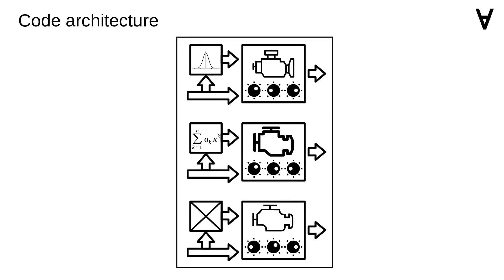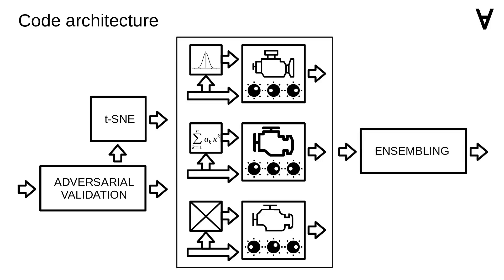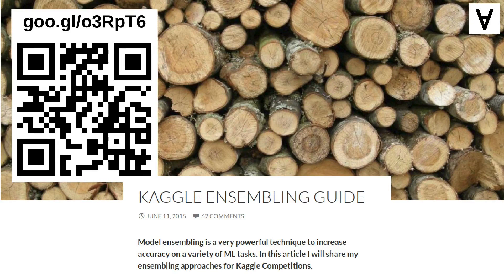Now let's have a closer look at how it's organized internally. The code uses multiple models. The input data for the models is prepared by applying a method called adversarial validation — you can have a look at the original post for details. There are also additional features added to the input data by applying a dimensionality reduction method called TSNE. Finally, after passing the data through selected models, the predictions are combined through a method called ensembling. That last step was one of the more interesting things I learned from that post, and you can also learn more if you follow this link.